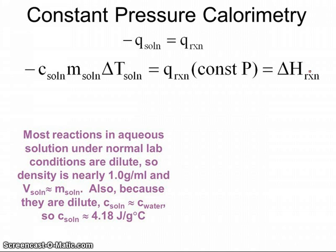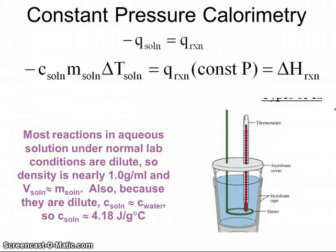Some generalizations: most reactions in aqueous solutions in a normal lab situation are dilute, so our density is nearly one gram per milliliter, just like water under normal conditions. So whatever volume we measure of that solution ought to be really close to the mass. Also, because these things are dilute, the heat capacity of that solution is not going to be greatly different from the heat capacity of water. So C solution in a dilute aqueous solution is usually about 4.18 joules per gram degree Celsius. Here's a nice diagram of your standard coffee cup calorimeter using styrofoam cups for insulation, a thermometer for measuring temperature change, and a stirring stick to constantly keep the heat flow uniform.